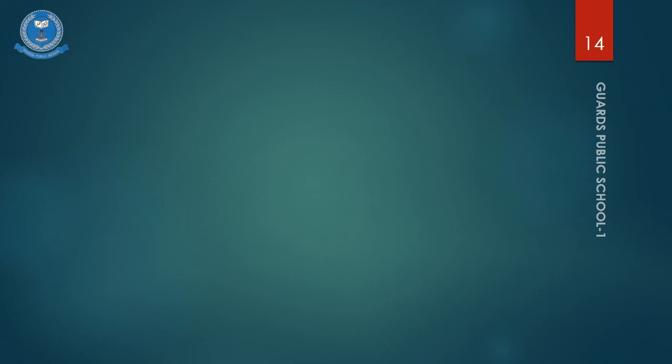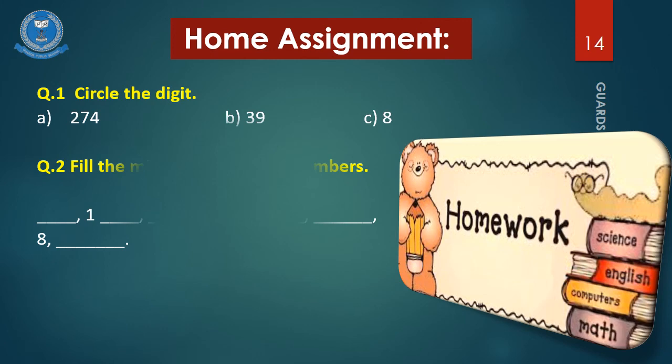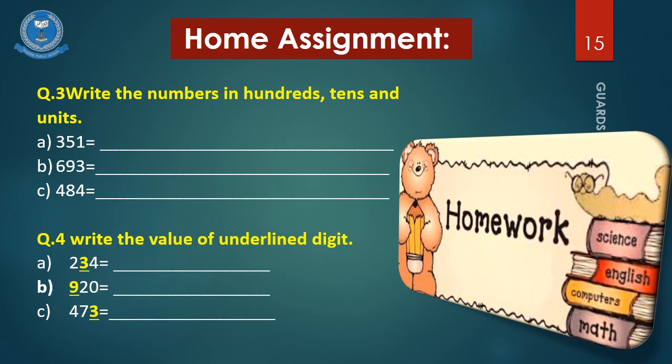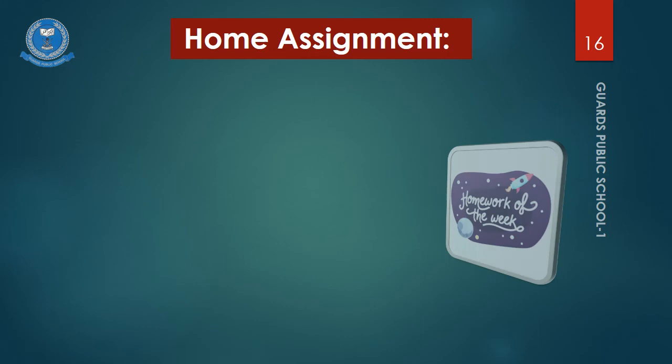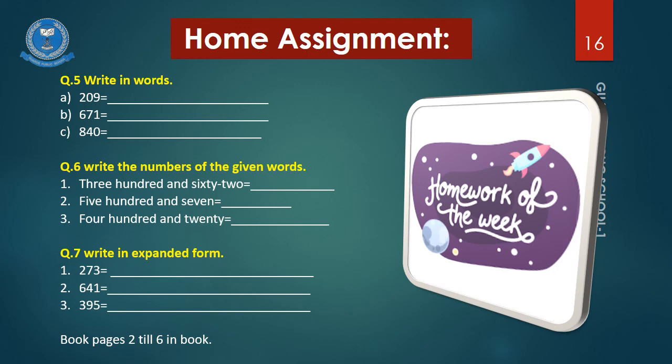It's time for home assignment. Are you ready? In question number one you have to circle the digit. Question number two is fill the missings of base ten numbers. Your question number three is write in hundreds, tens and units. In question number four you have to find out the place value of underlined digit. In question number five you have to write numbers in words. Question number six is write the numbers of the given words. Your question number seven is write in expanded form. After this you have to complete book pages from two till six in book.